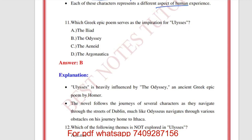Which of the following themes is NOT explored in Ulysses? Science fiction is the theme not explored. We can see religious matters, death, and love as themes that are explored in Ulysses.